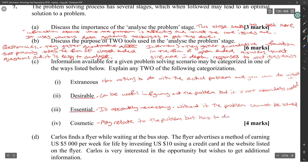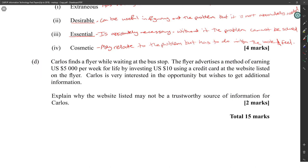Part D: Carlos finds a flyer while waiting at the bus stop. The flyer advertises a method of earning US $5,000 per week for life by investing US $10 using a credit card at the website listed on the flyer. Carlos is very interested in the opportunity but wishes to get additional information.